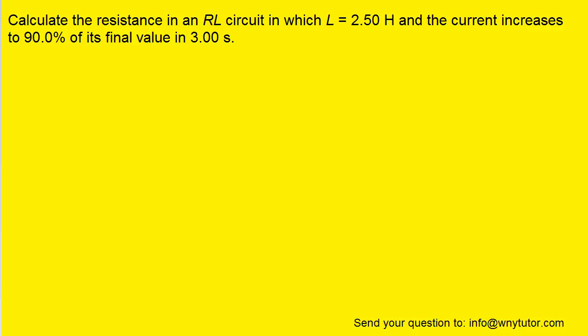What we need to do in order to solve the question is write out the equation that describes the current as a function of time for an RL circuit. Here is that equation as it's presented in the textbook. What we want to note is that the term EMF divided by resistance actually represents the maximum current that will be attained in the circuit. So we're going to replace EMF divided by resistance with this term I_max, which is the maximum current.